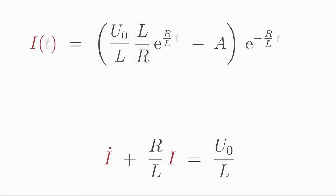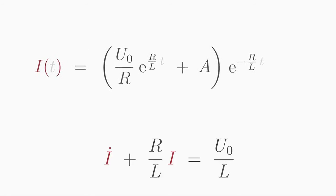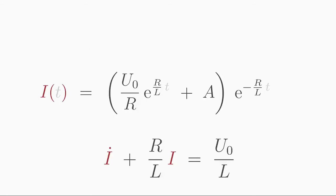Finally, we hide the constant of integration in the constant A. And this is our general solution. We can simplify it a bit more by multiplying out the parentheses. Two exponential functions simplify to one.